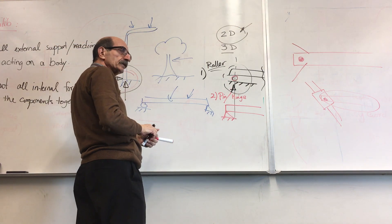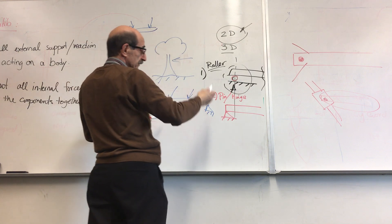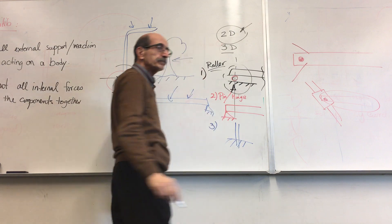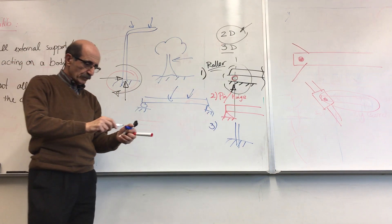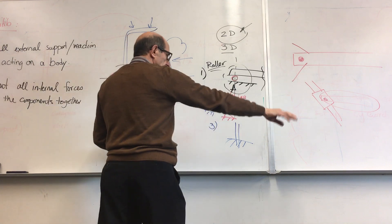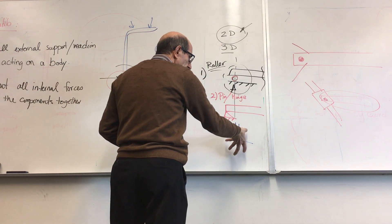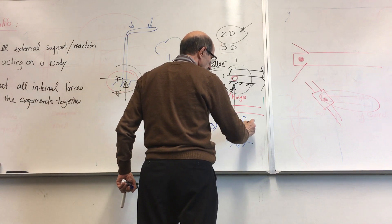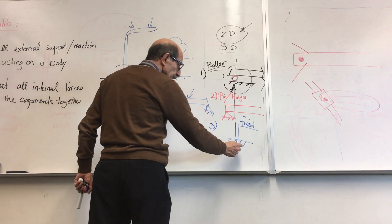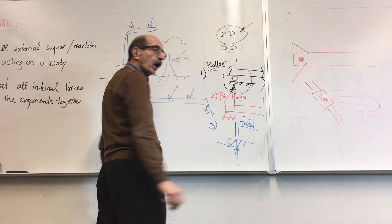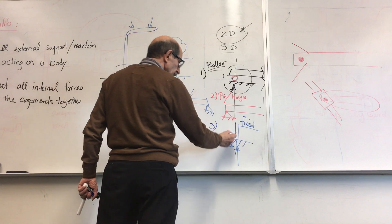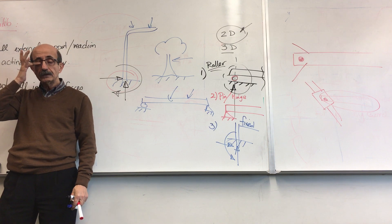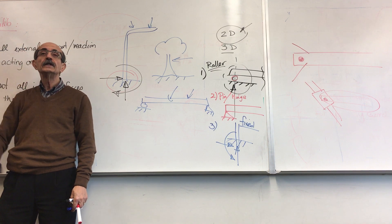Then there is another type of support — like the root of a tree, or a light pole fixed in the ground, or the foundation of a building in concrete. Motion in this direction is not allowed, motion in that direction is not allowed, and rotation is not allowed. We call this a fixed end support, which means there are three unknowns: forces and a moment resisting both rotational and translational motion in all directions.